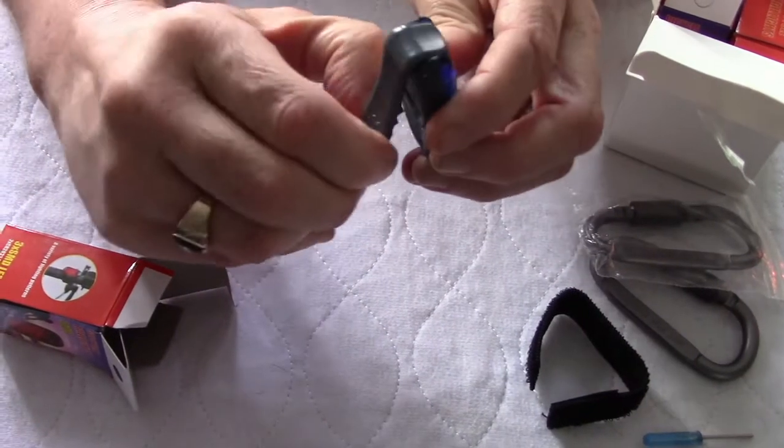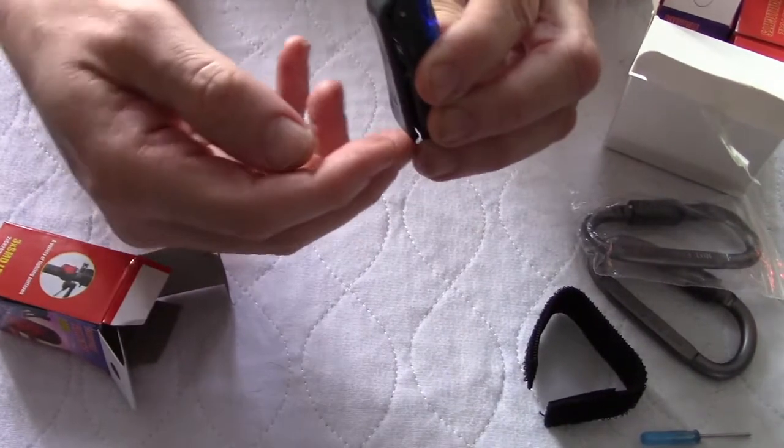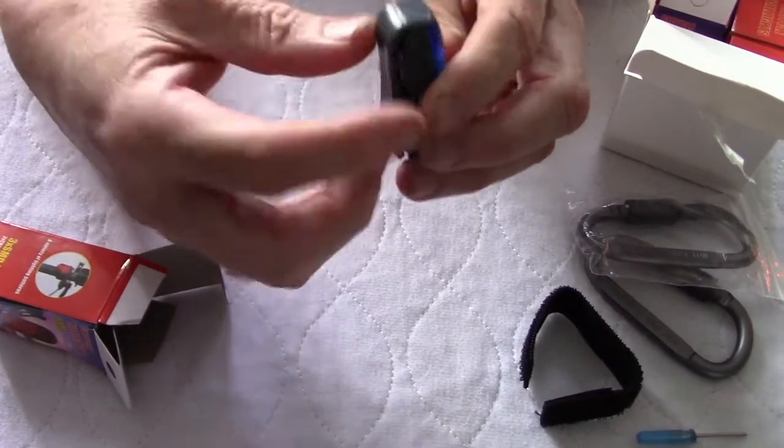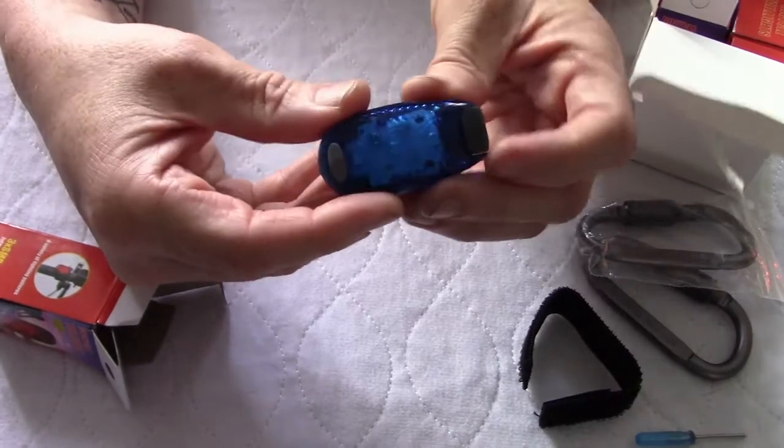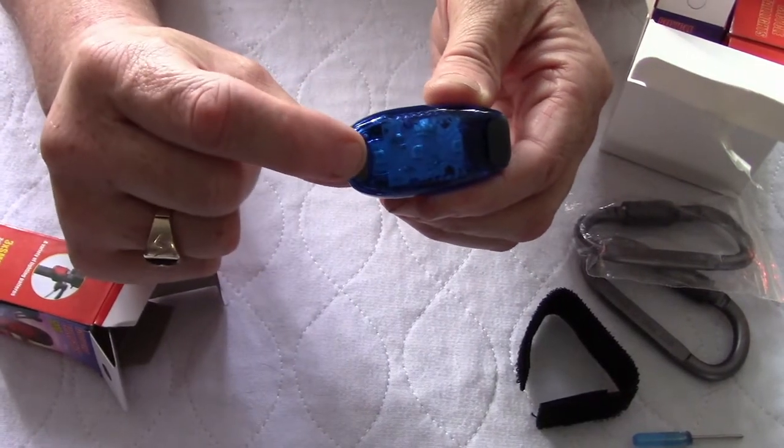On the back of the unit you've got your clip so you can put that on your belt at the back or clip it to your backpack. And then on the front this is your little switch here for turning on the unit.